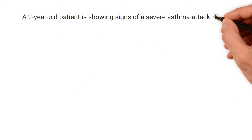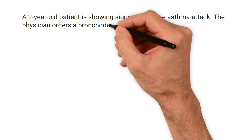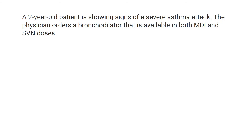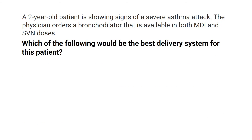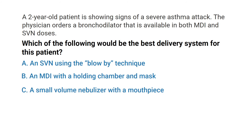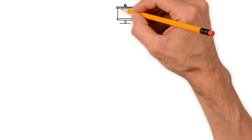A two-year-old patient is showing signs of a severe asthma attack. The physician orders a bronchodilator available in both MDI and SVN doses. Which of the following would be the best delivery system for this patient: A) an SVN using the blow-by technique, B) an MDI with a holding chamber and mask, C) a small volume nebulizer with a mouthpiece, or D) a breath-actuated MDI with a mask?